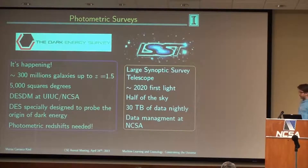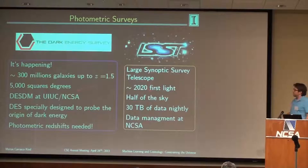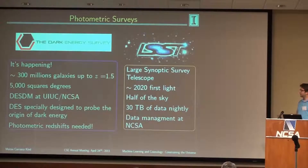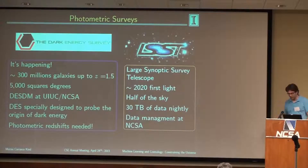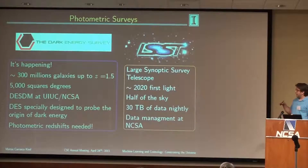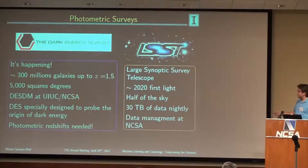There is also another survey even bigger than DES: the Large Synoptic Survey Telescope, the LSST, which has received green light. They already have their site and are building the mirrors and telescope. First light is expected in 2020 — about eight years from now. They'll survey half of the sky and expect at least 30 kilobytes of data each night. The data management will also be here, so these are very important surveys for Illinois. We are trying to address the distance measurements for this data.